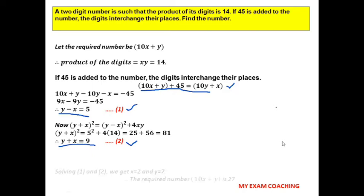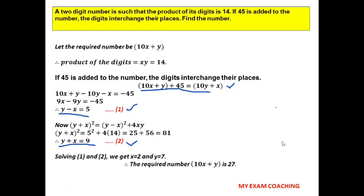Solving y − x = 5 and y + x = 9 by any method, we get x = 2 and y = 7. The required number is 10x + y = 10(2) + 7 = 27. These types of questions are very common in exams and typically carry 3 to 5 marks.